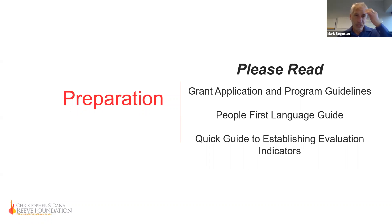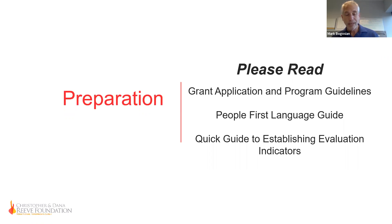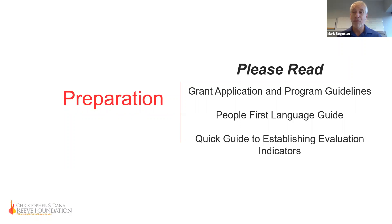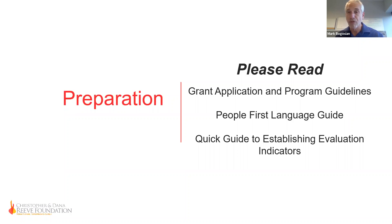We also have available on our website the People First Language Guide — guidelines for discussing people with disabilities — and a quick guide to establishing evaluation indicators. The grant application requires you to describe evaluation indicators to measure the success of your project. These indicators must be a combination of both input and output indicators and must be measurable. You'll also be asked to describe evaluation methods, which could be surveys, interviews, focus groups, or a review of program documents.